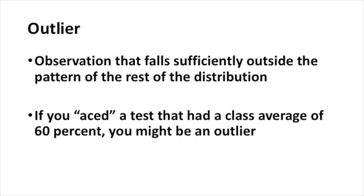Some of these observations that are different we can formally call outliers. An outlier is an observation that falls sufficiently outside the pattern of the rest of the distribution. For example, if you aced a test that had a class average of 60%, you might be an outlier.